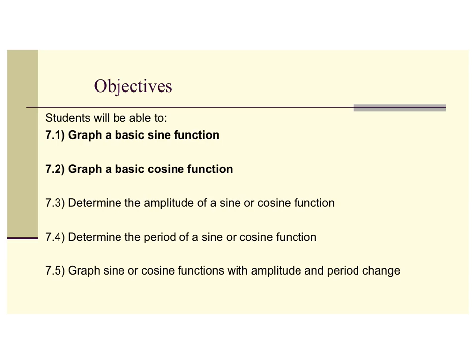We're going to break this down into four parts for this lecture. First, we'll graph the basic sine and cosine function. Then we'll see it with a change in amplitude. Then a change in period. And finally, we'll put it all together.